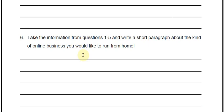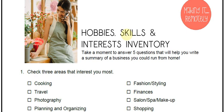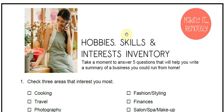Number six — you want to take all the information from questions one through five and write a short paragraph about the kind of business you would like to run from home. This is a quick way for you to narrow down some of the areas that you might want to work in when it comes to having an online business. The next thing we're going to work on is helping you find a niche and do your market research. Thanks for watching and I'll see you in the next lesson.